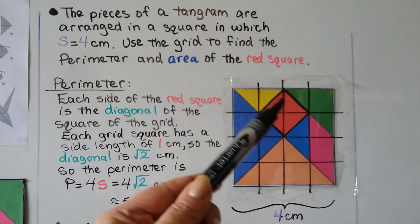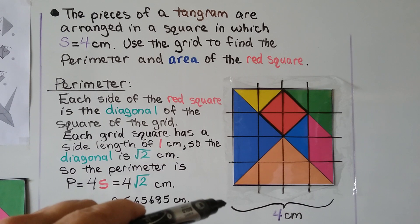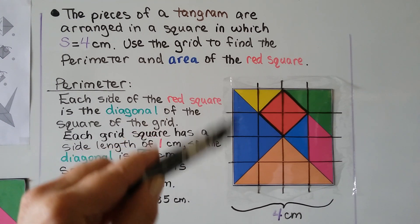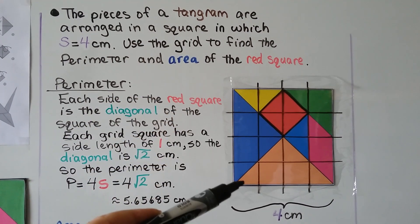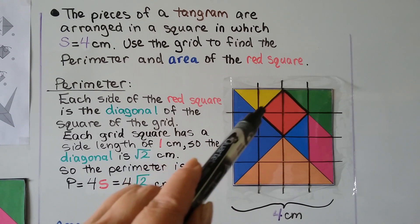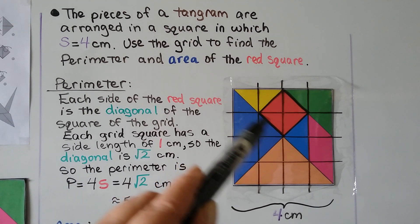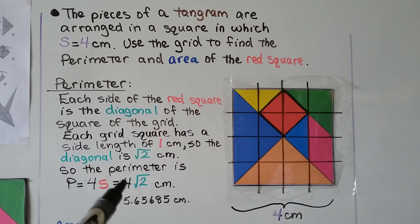Take a look at this tangram and the red square. The pieces of a tangram are arranged in a square with a side of four centimeters. Looking at the grid, each small square is one centimeter. Each side of the red square is actually a diagonal of a grid square, and since each grid square has a side length of one centimeter, each diagonal is the square root of two centimeters. So the perimeter of the red square is four times the square root of two centimeters, which is approximately 5.6566 centimeters.